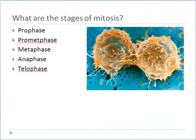Now let's look at the stages of mitosis and see what happens when a eukaryotic cell divides up its genetic material between two daughter cells. There are basically five different phases: prophase, prometaphase, metaphase, anaphase, and telophase. We're going to go through each of these one by one.